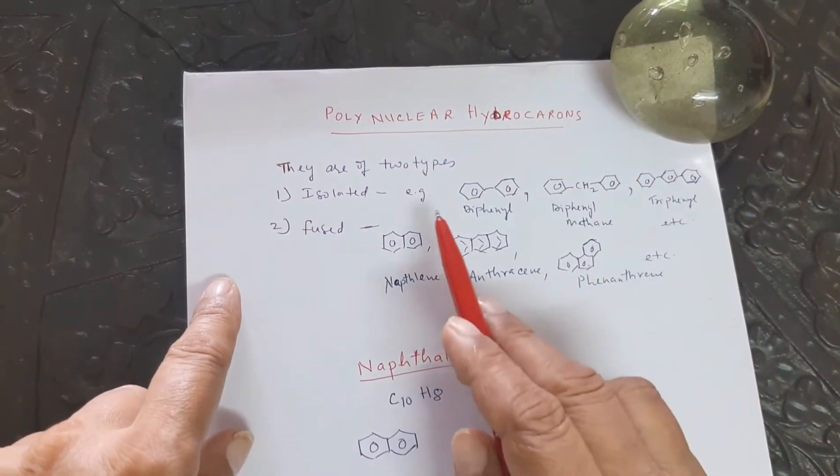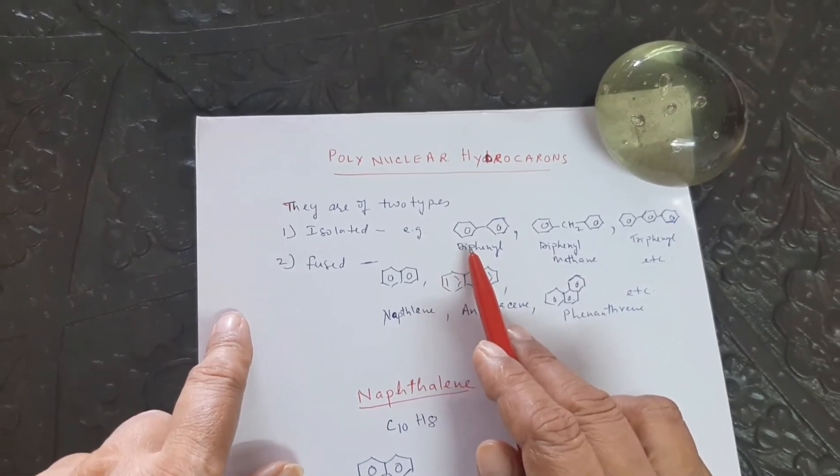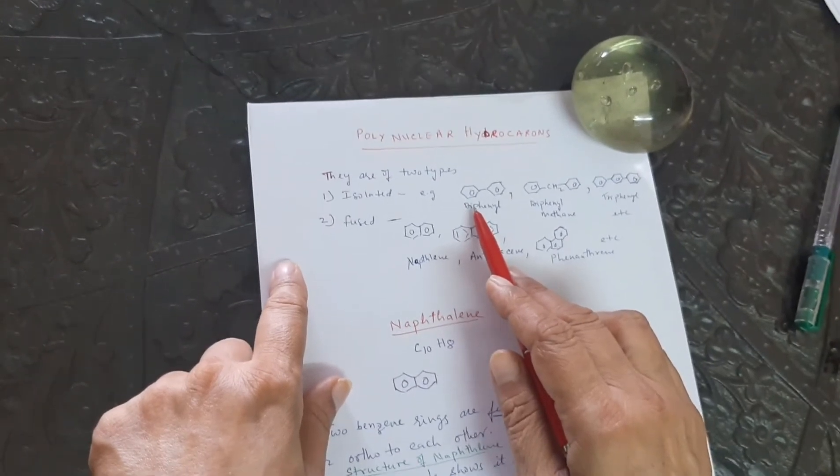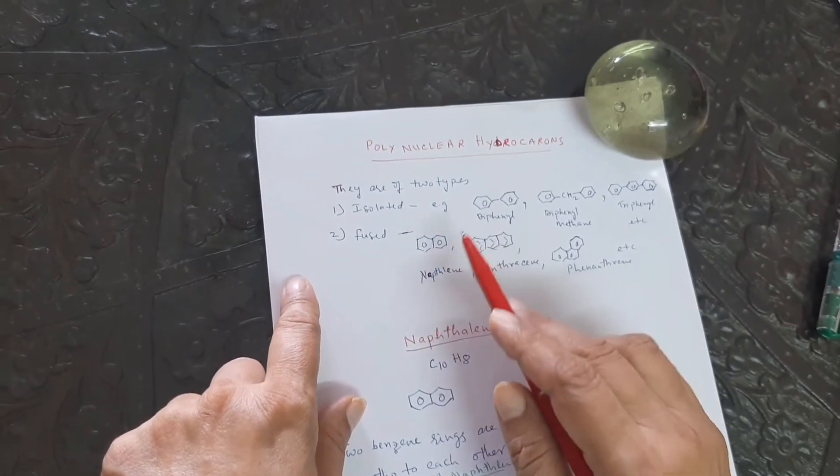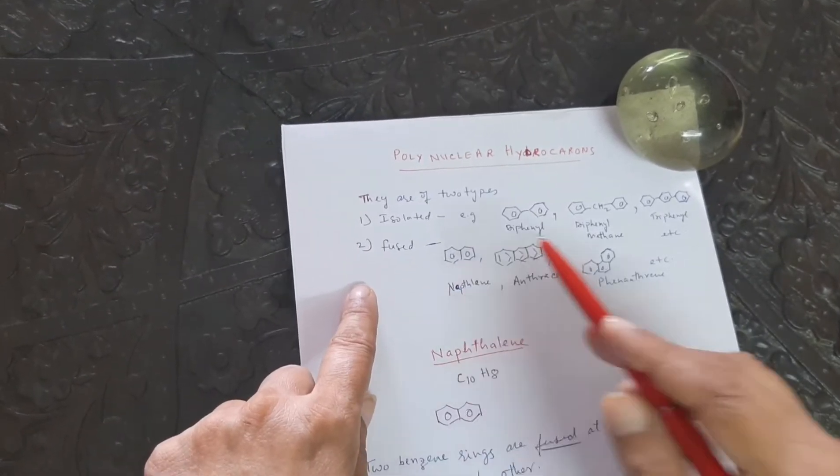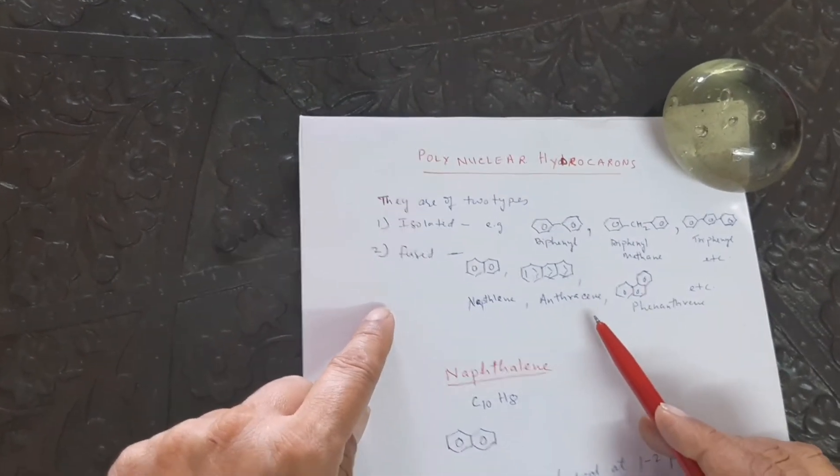The isolated polynuclear hydrocarbons have the same nature, structure and properties like benzene. But in the fused polynuclear hydrocarbons, they have different type of properties also. Of course they are aromatic.